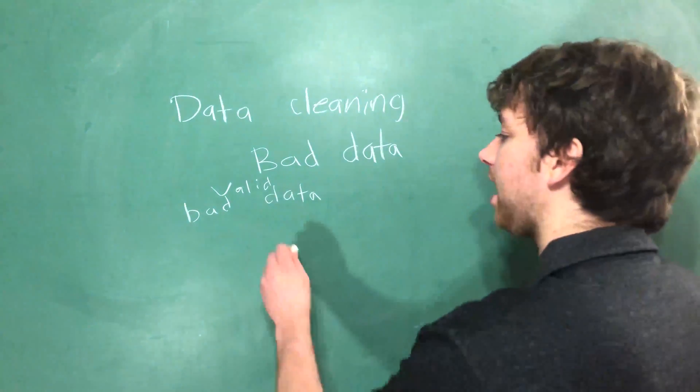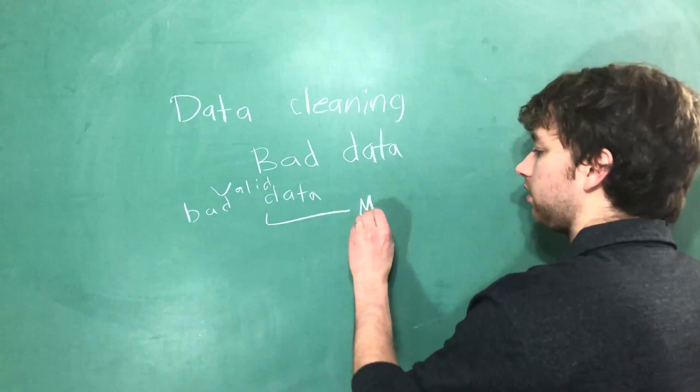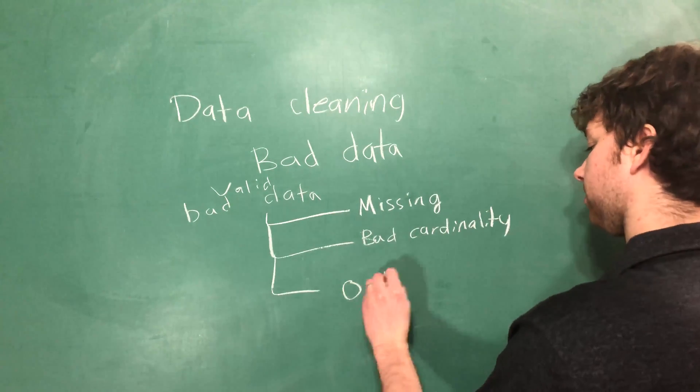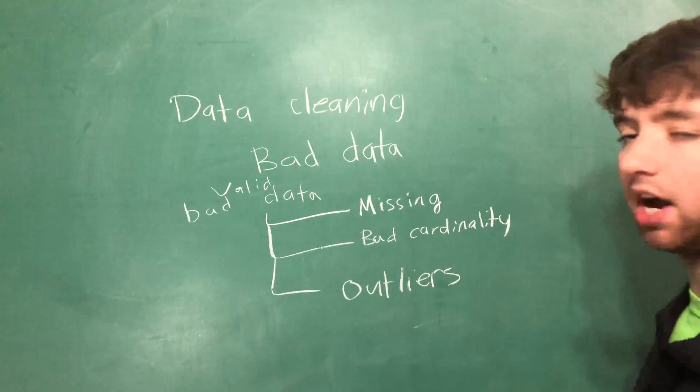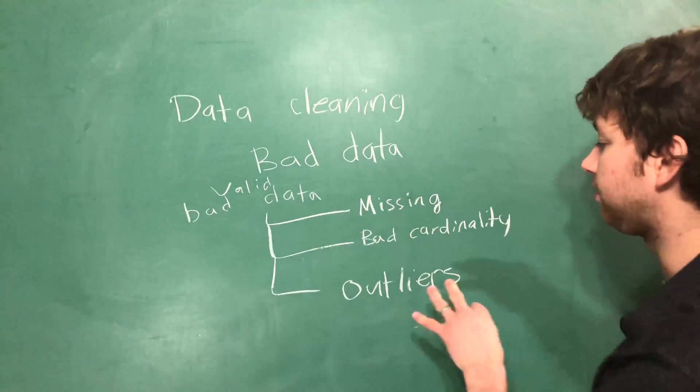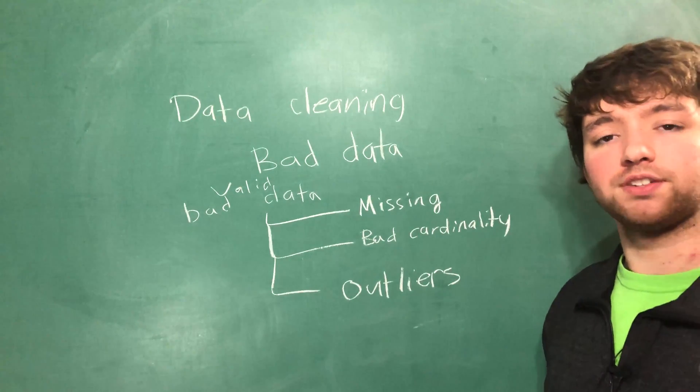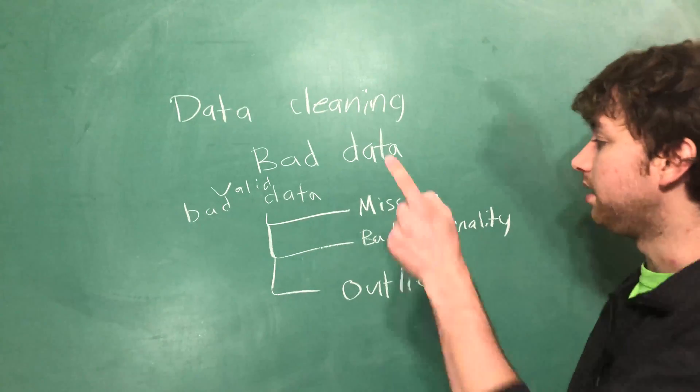And those are the three categories of valid bad data. Missing data, bad cardinality, and outliers. And in the upcoming videos I'm going to be teaching you guys how to deal with these three issues. So check out the next video where we will go into missing data. Peace.